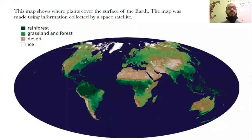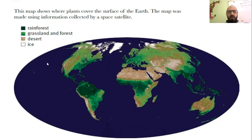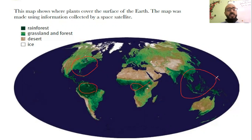This map shows where plants cover the surface of the earth. The map was made using information collected by space satellite. As you can see in this picture, the dark green places — here, here, and here — these dark green places are rain forests. Rain forest means raining most of the time or most of the year.